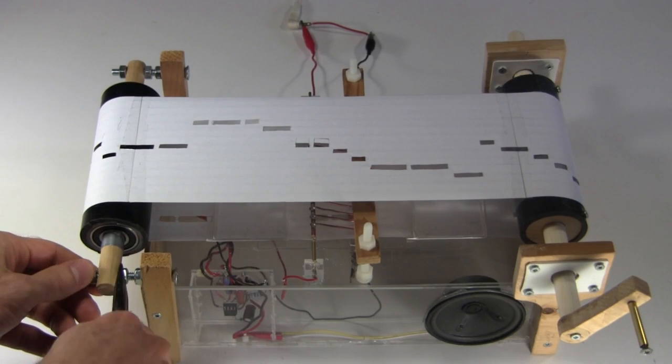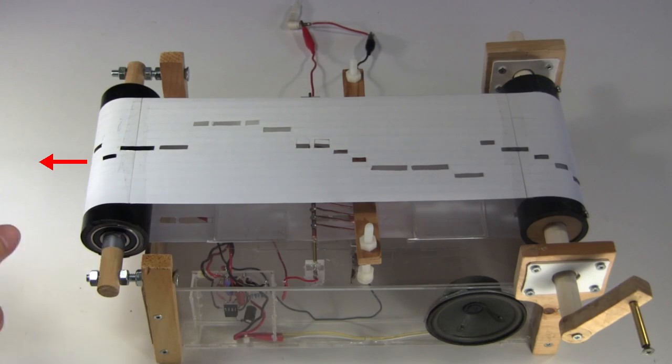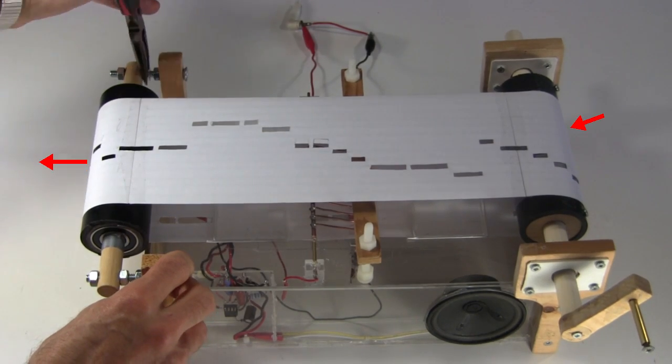So I mounted this other roller on long bolts. By turning these nuts, I can move the roller further this way as needed. That pulls on the paper, tightening it against this other roller.